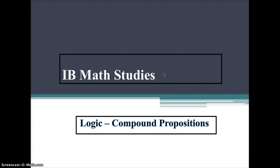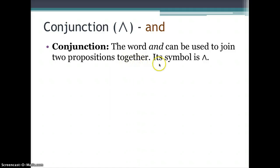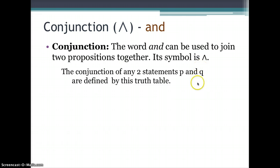Welcome to logic: compound propositions. Let's start with conjunction. The word 'and' can be used to join two propositions together. Its symbol is an upside-down V. Whenever you see this symbol, read it as 'and.'